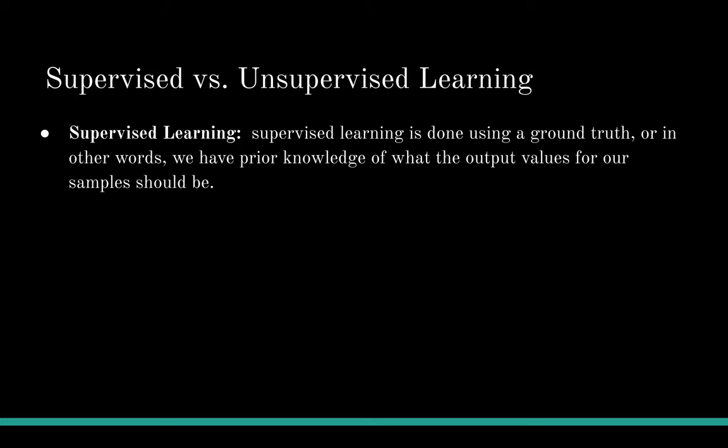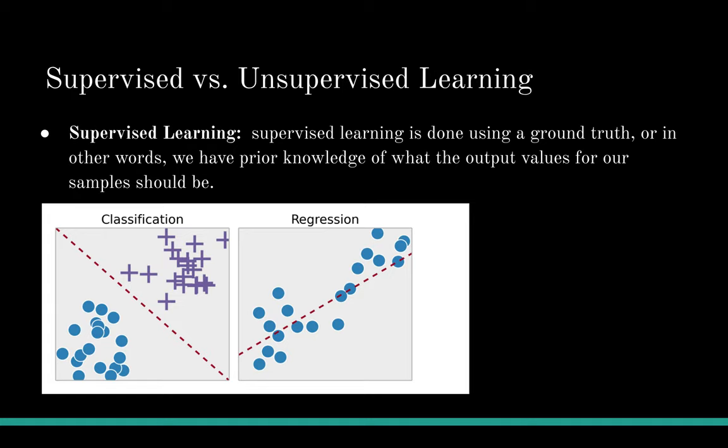To start, we want to give an introduction about supervised and unsupervised learning, which are the two most essential fields of both data analysis and machine learning. Supervised learning is done using a ground truth — in other words, we have prior knowledge of what the output values for our samples should be. This picture shows the characteristics of data samples in supervised learning. Dots and crosses are clearly labeled and obviously fall into two groups, and on the right we can see a clear regressional relationship.